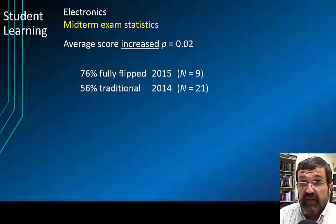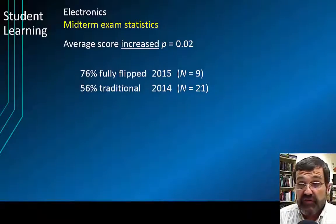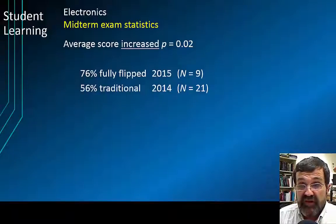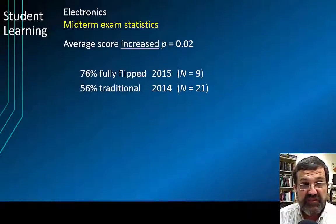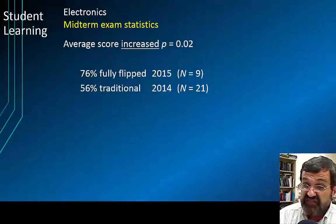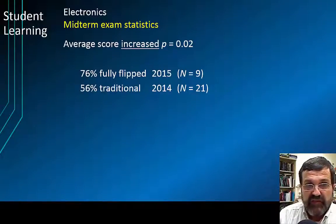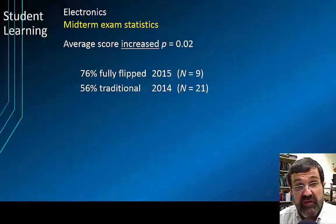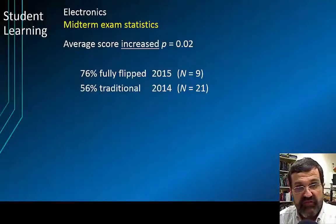What about student learning? In my fully flipped electronics class, I gave the same midterm exam as the previous year when I had taught traditionally using a chalkboard. My scores went up quite a lot, from 56% to 76%. Now, there were only nine students (n=9), but the t-statistics are supposed to take that into account. The outcome is a p-value of only 0.02, and that gives me confidence in concluding that my students truly did perform better on the exam when flipping was used.